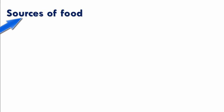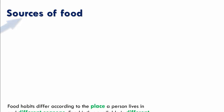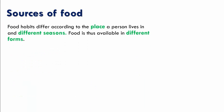Let us now move on to the main topic which is sources of food. A large variety of food is available in different forms. This is due to the fact that food habits differ according to the place a person lives in and the different seasons that we experience throughout the year.